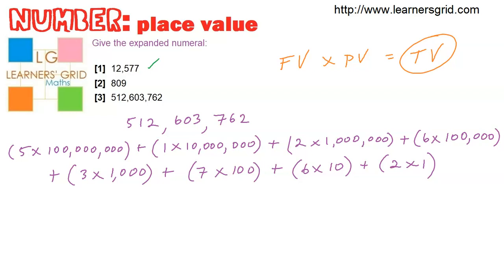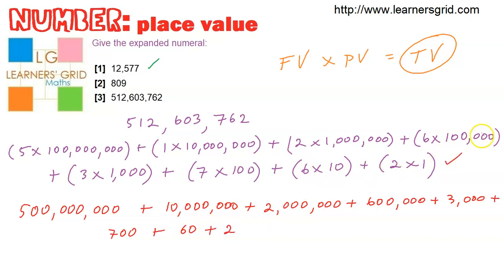And let's just write down the expanded version. So the first one is 500 million plus 10 million plus 2 million plus 600,000 plus 3,000 plus 700 plus 60 plus 2. So there we have it. Fully expanded version, expanded version, and it is all done.